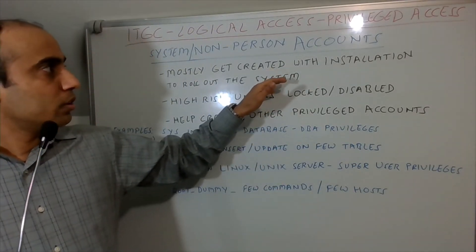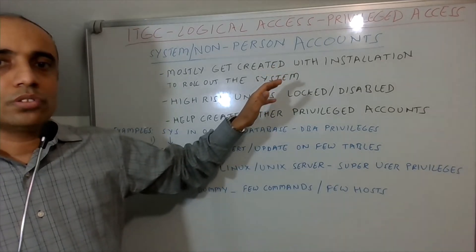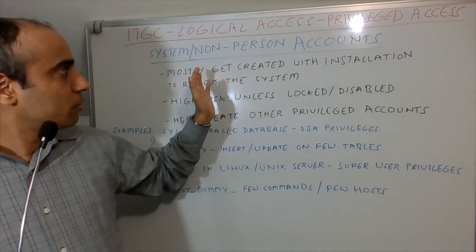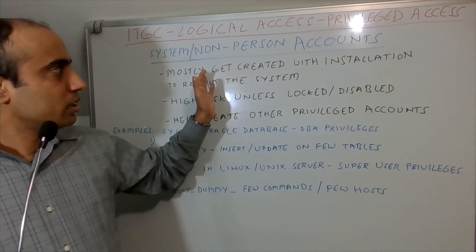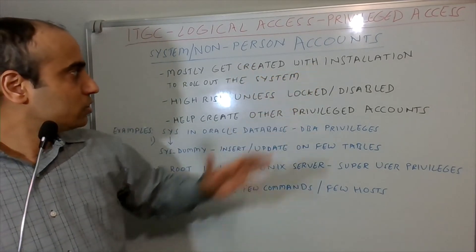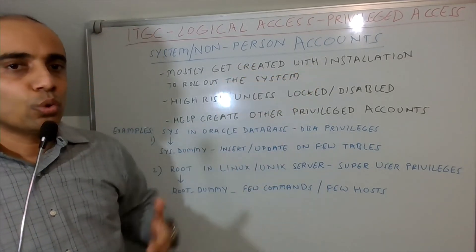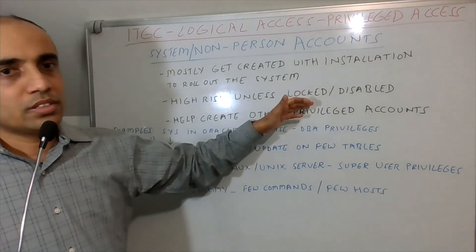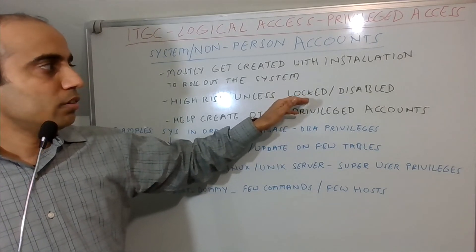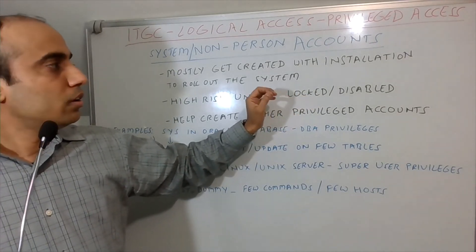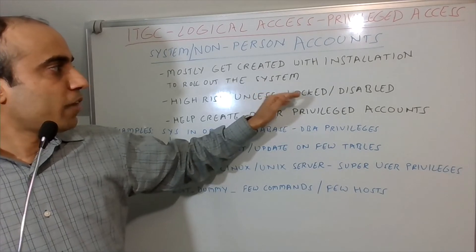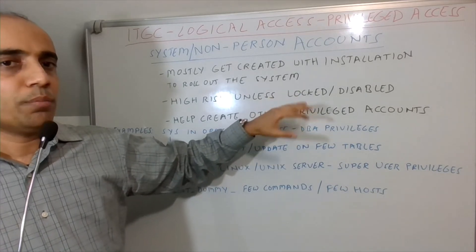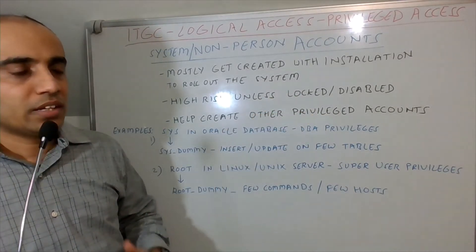Just to recap: the question was around system accounts — why they are created and what kind of privileges they have. The obvious reason is that system accounts get created with installation; they help in the rollout of the system — that's the reason they exist. They are high risk unless locked or disabled, and this is a very important point which also emphasizes why we test non-person accounts in a very different way in privilege access testing. That's where the risk is.